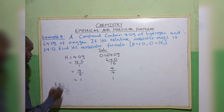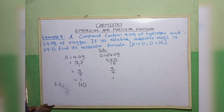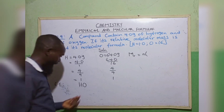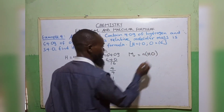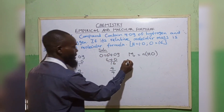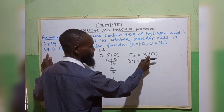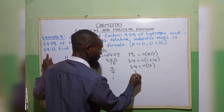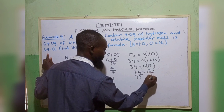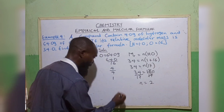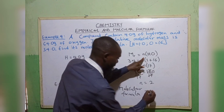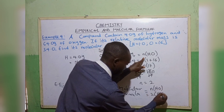Now we want to calculate the molecular formula. Relative molecular mass equals N brackets of our empirical formula HO. Relative molecular mass is given as 34, so 34 equals N bracket, atomic mass of hydrogen 1 plus oxygen 16, giving 34 equals N bracket 17. So 34 equals 17N. Dividing both sides by 17, N equals 2. So our molecular formula is 2 bracket HO, which gives H₂O₂.